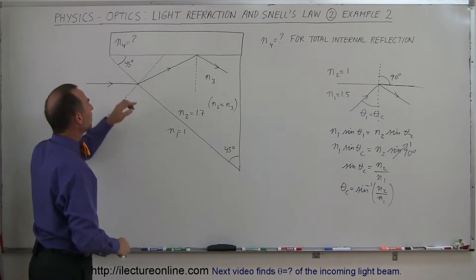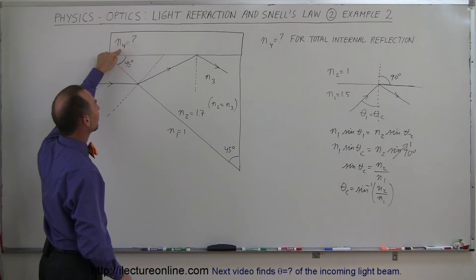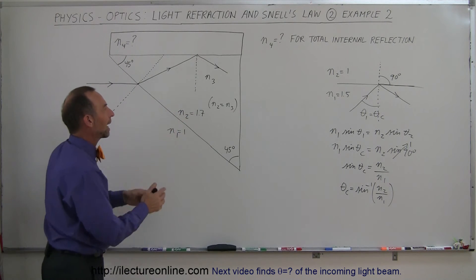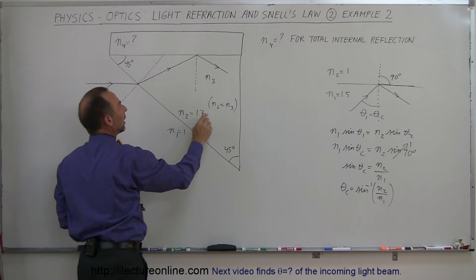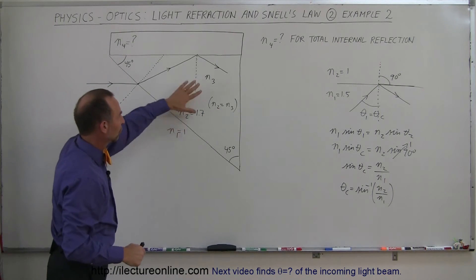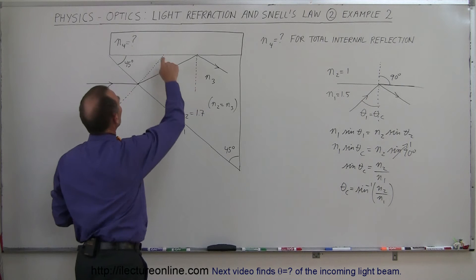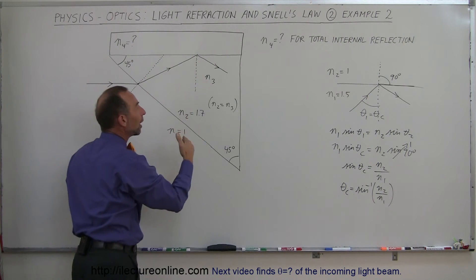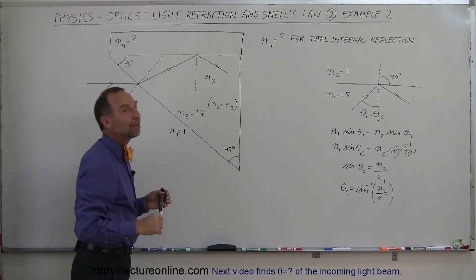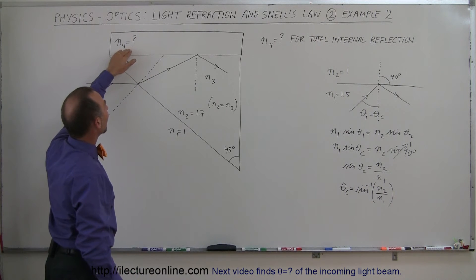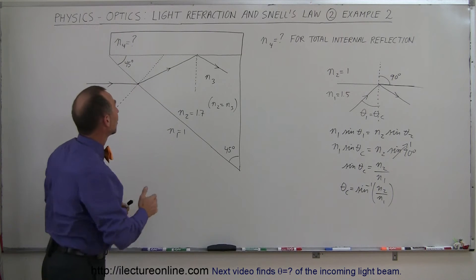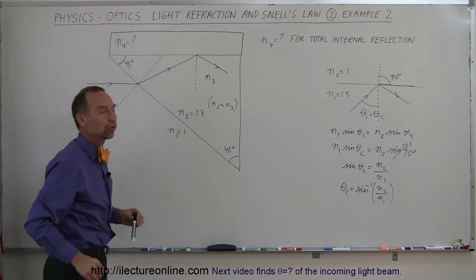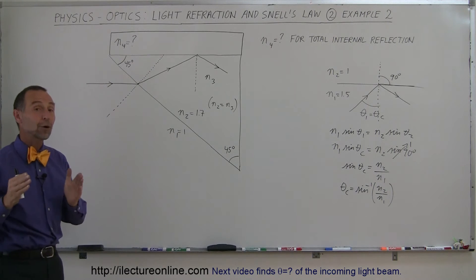So we want N4 to be significantly smaller than N3 — the index of refraction of the glass — otherwise the light will easily leave. What is the largest value N4 can be where the light is still internally reflected under these conditions? The larger N4 becomes, the harder it is for light to internally reflect. Let's now go solve the problem.